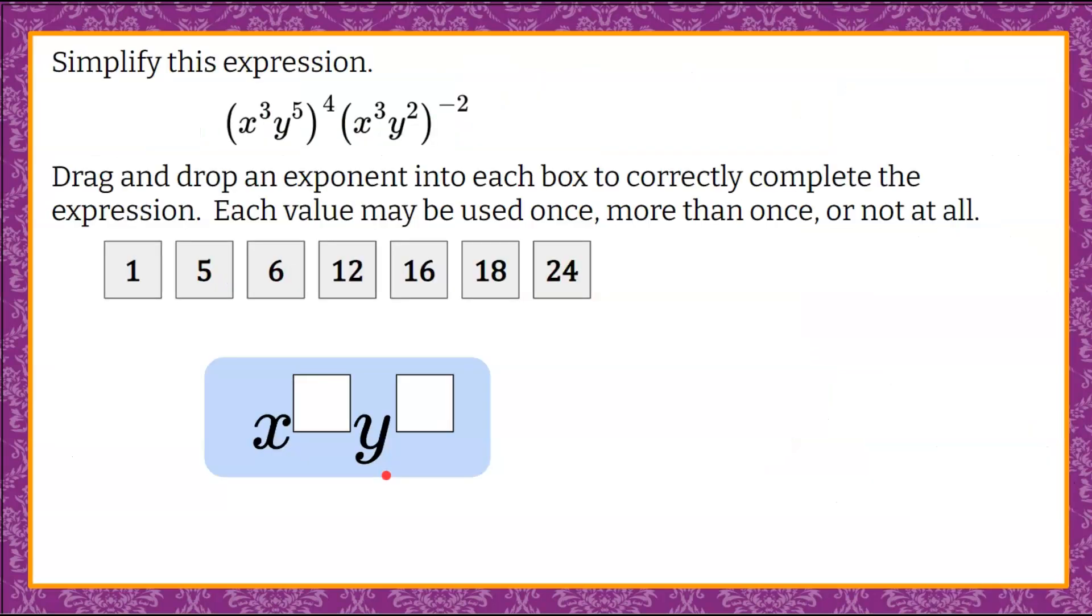Here's our question today. We are asked to simplify this expression: x cubed, y to the fifth, to the fourth, times x cubed, y squared, to the negative two.